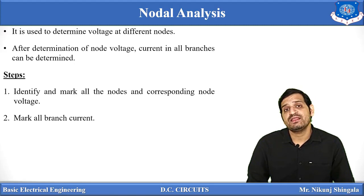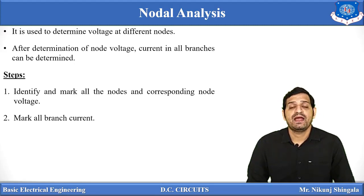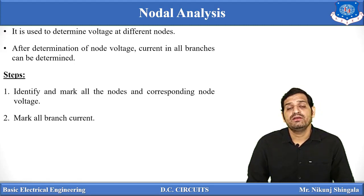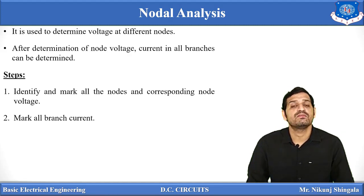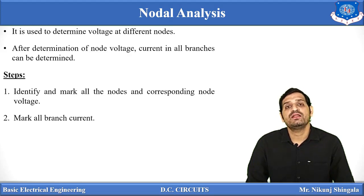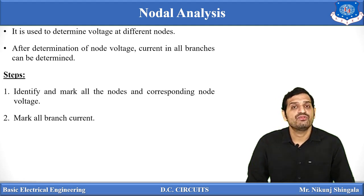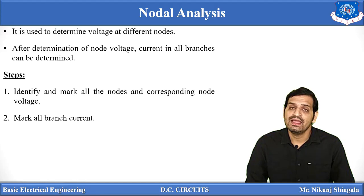In mesh analysis, we discussed branch current and mesh current. In mesh analysis, if one current is I1 and another is I2, then the third branch current is taken as I1 minus I2 — there are limitations on the number of unknowns. But in nodal analysis, there is no such limitation. If input current is I1, output currents can be taken as I2 and I3 separately.